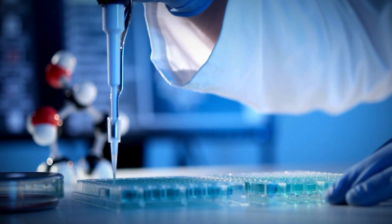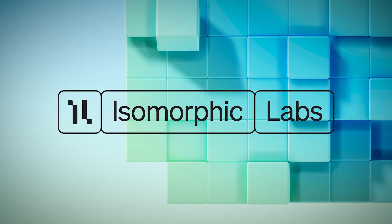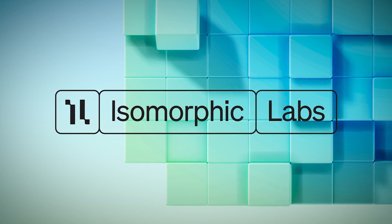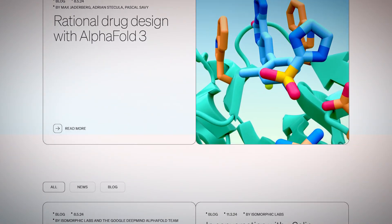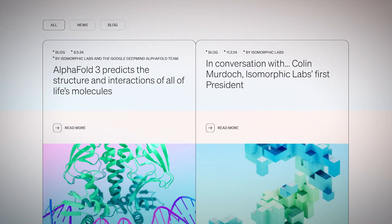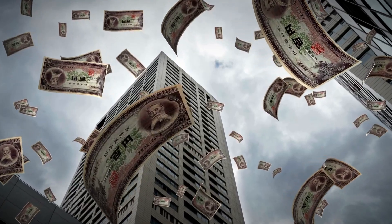Isomorphic Labs, a company owned by Google's parent company Alphabet, aims to use AI for drug discovery. Researchers from Isomorphic Labs helped develop AlphaFold3 and will have exclusive access to it for commercial use.